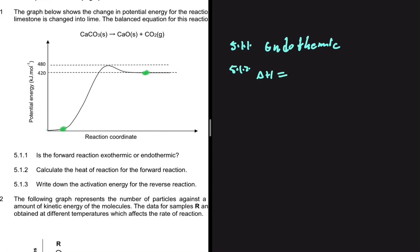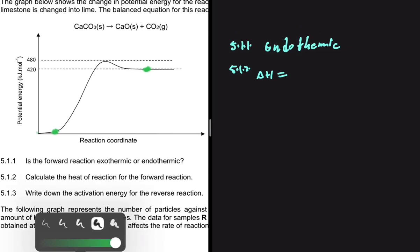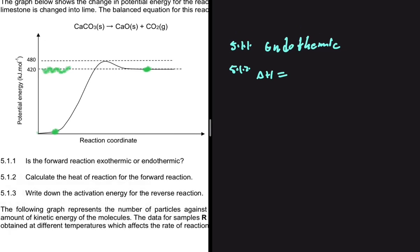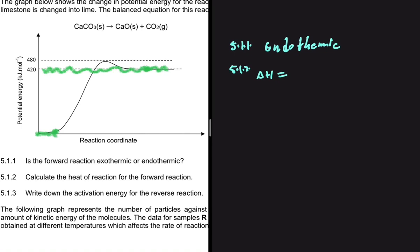Let's look at the energy of the products first. Our products have an energy of 420 kilojoules per mole, while the reactants start with an energy of 0 kilojoules per mole. So our enthalpy change will be 420 minus 0, which equals 420 kilojoules per mole.